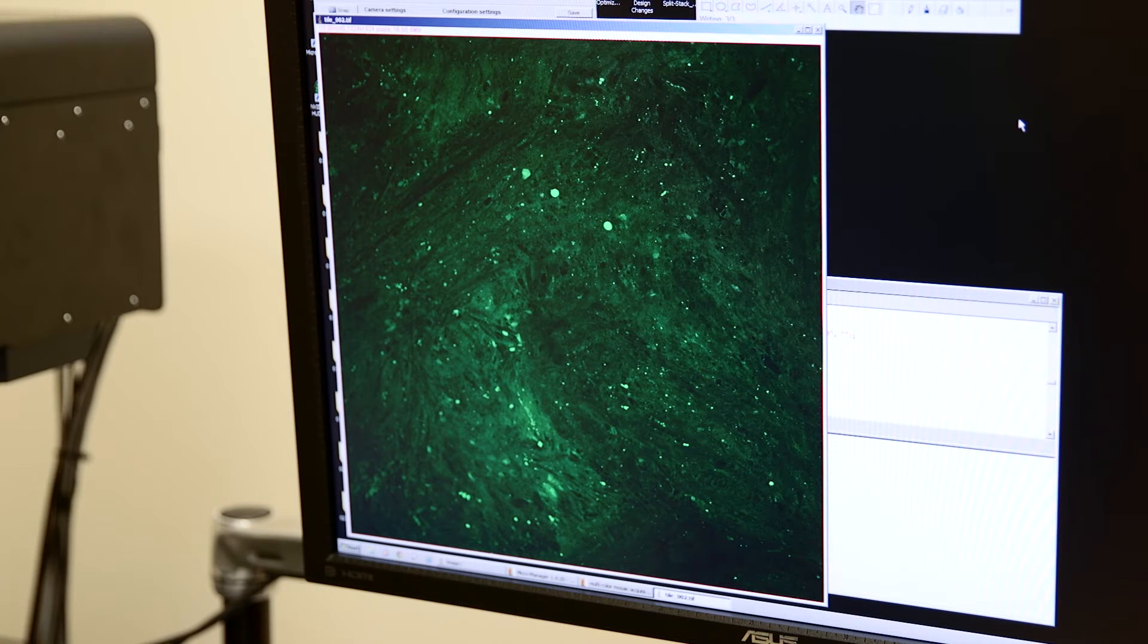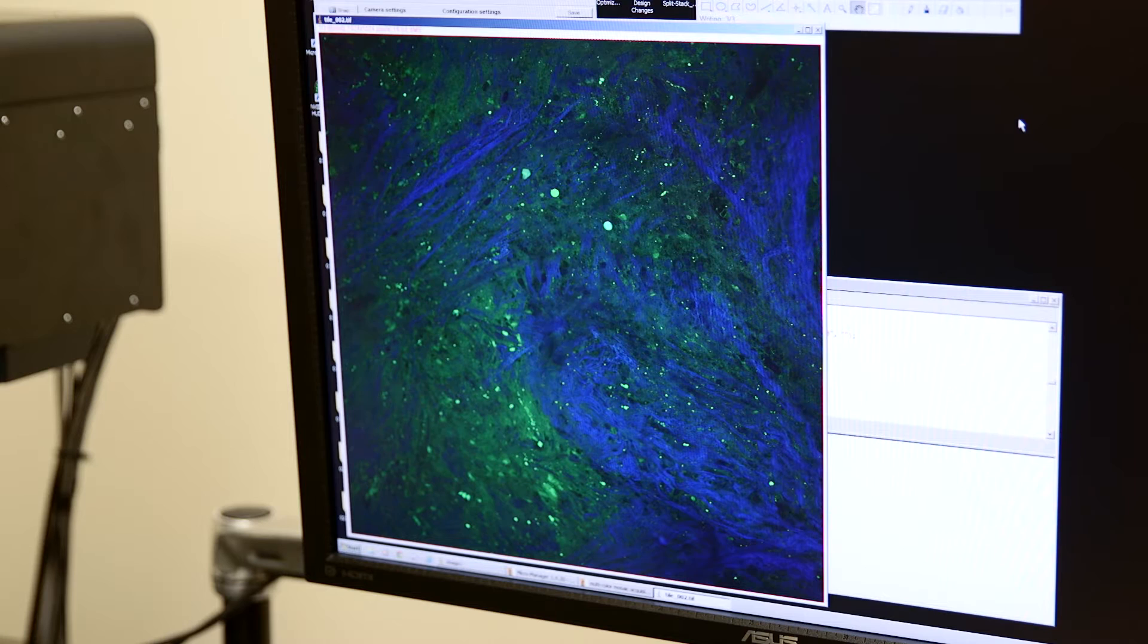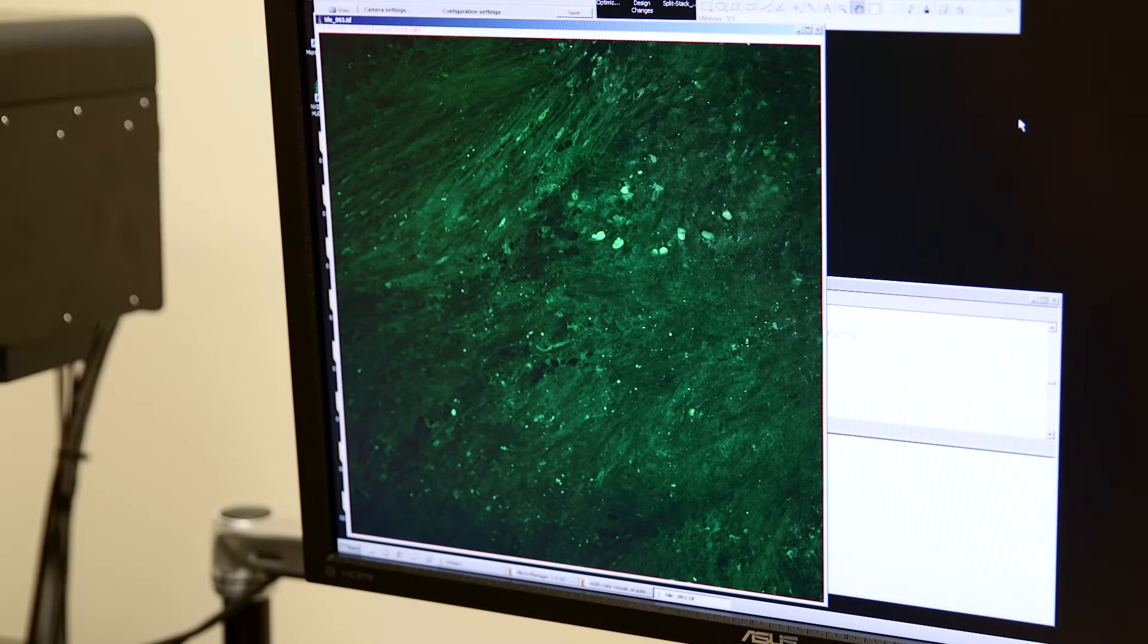Generally what you see here is in green is lipid-rich structures. What's in blue is protein-rich structures so we can actually use that lipid protein ratio to see cells in the tissue and it allows us to differentiate between normal tissue which is much less cellular and tumor infiltrated tissue which contains a lot of tumor cells.